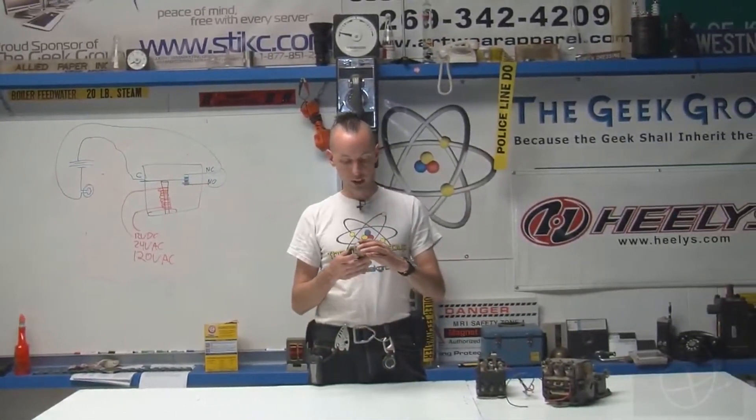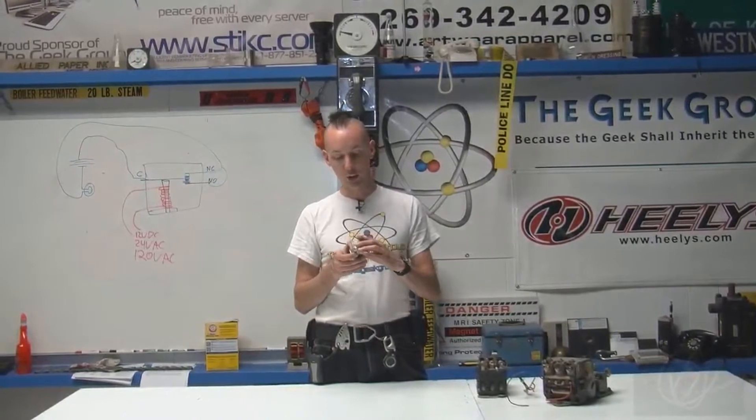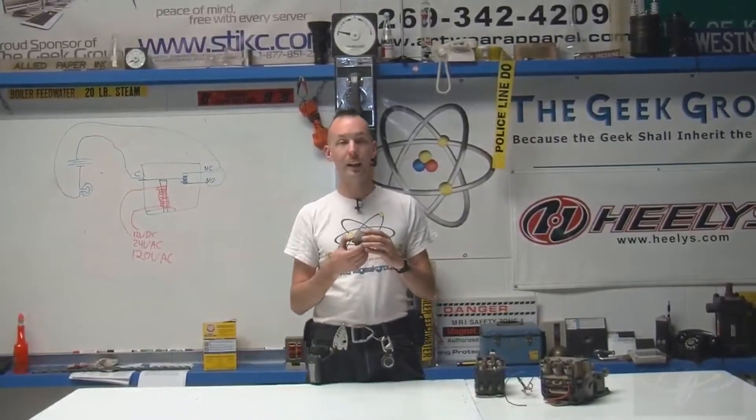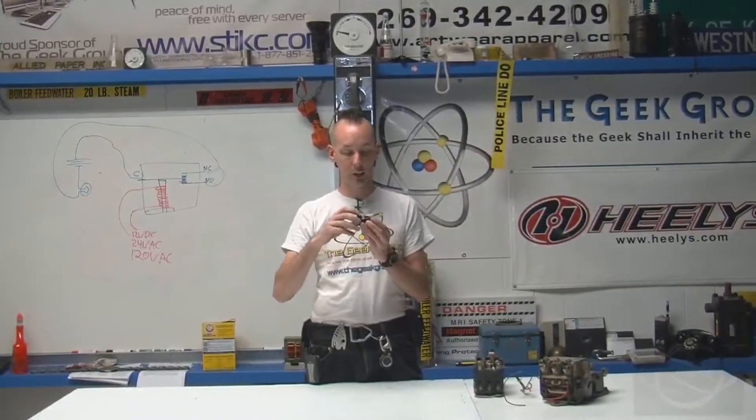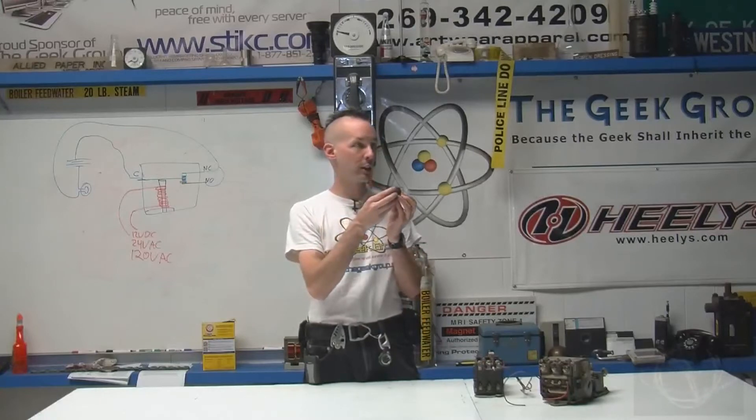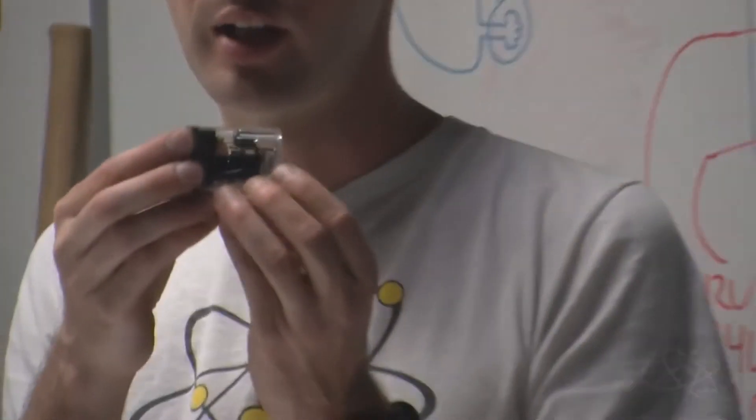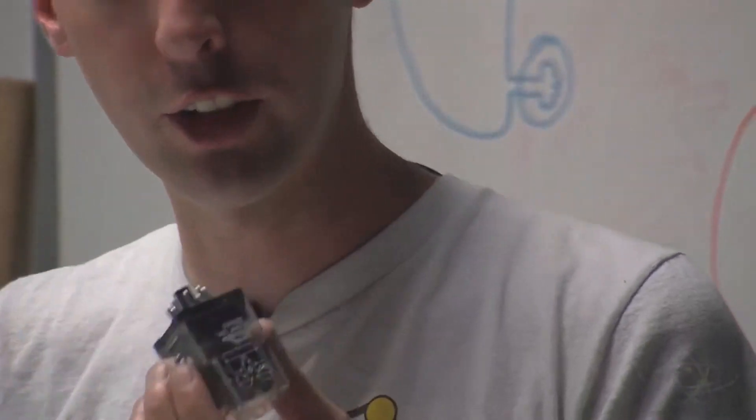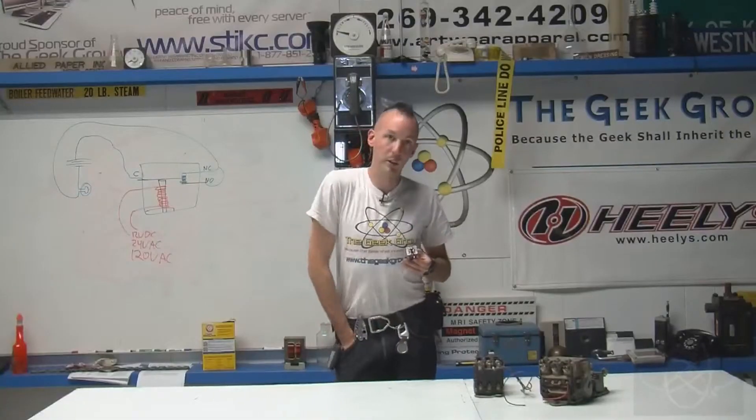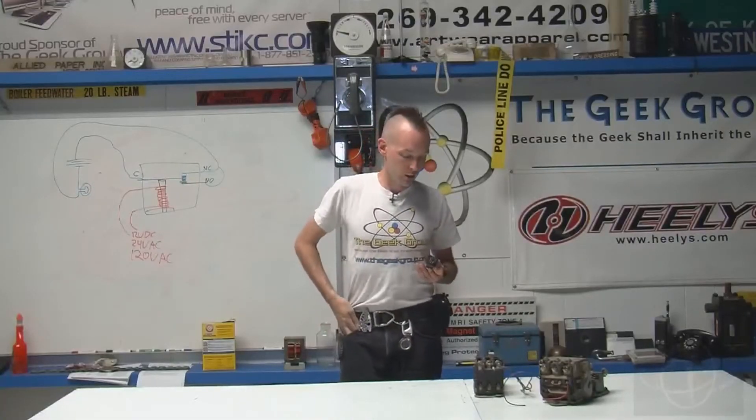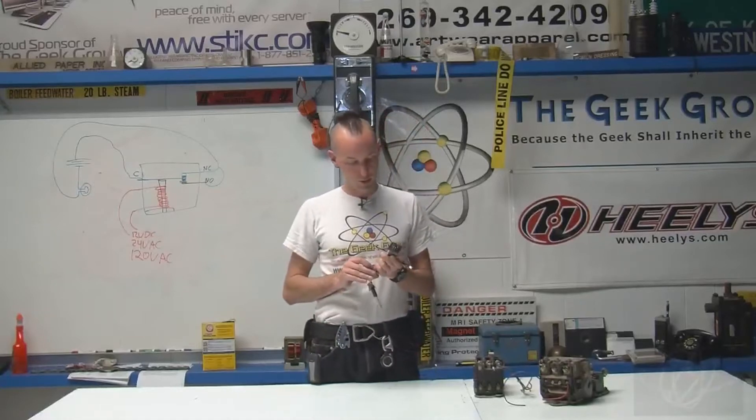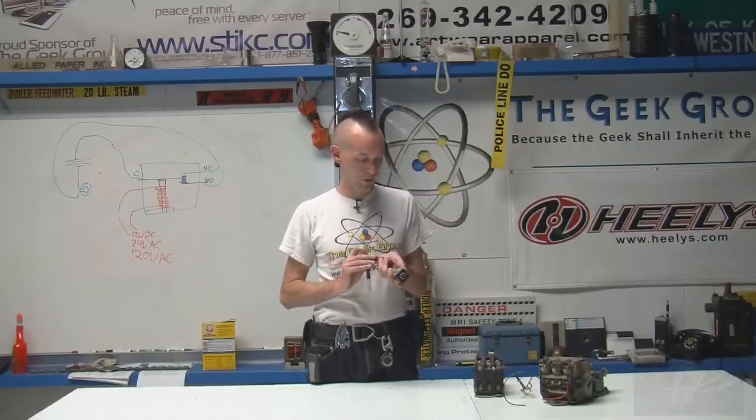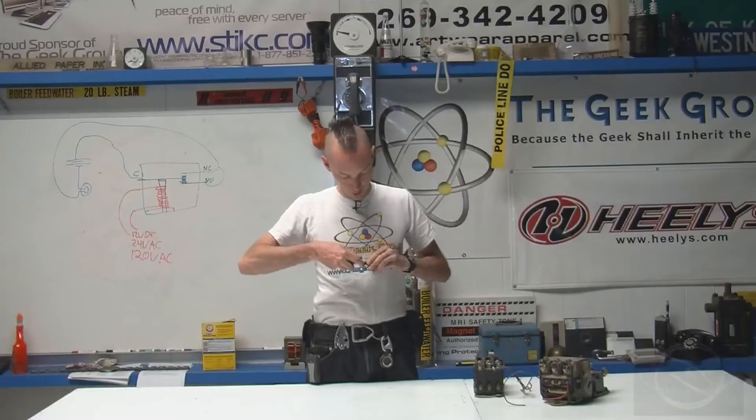So this relay here is rated for up to 250 volts AC at 10 amps on the contactors, and I don't know if you can zoom in tight enough to see the little contactors on there. Take a look. You can see there's little contactors inside. Actually I think I could open this right up and you can take a look in. We can break a relay. Let's just pop it right open and share it with the world.